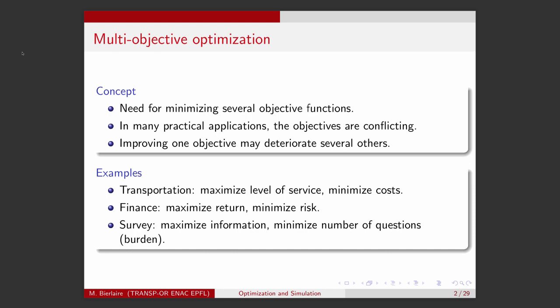In portfolio optimization in finance, you want to maximize the return, but you also want to minimize the risk. And these two objectives are conflicting. If you design a survey, you want to maximize the information that you will get from the respondents, but you also want to minimize the number of questions, because it's a burden for the respondents that may deteriorate the quality of response. And the list is long of concrete applications where the various objectives that are meaningful are conflicting.